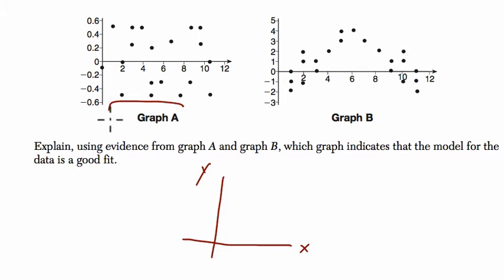That tells me that the answer is graph A, because what you need is a random scattering of points. And you can actually say that in your answer here. If you're saying that graph A is a better fit, you can say it's a better fit because the residuals are scattered in a random pattern.